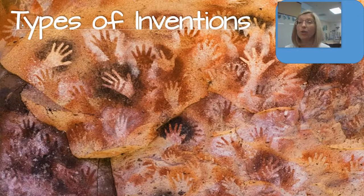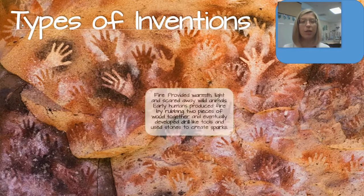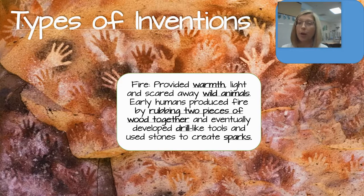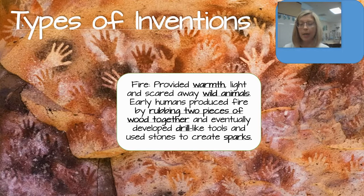Now we're going to talk about the types of inventions during the Paleolithic age. Fire — it provided warmth, light, and scared away wild animals. Early humans produced fire by rubbing two pieces of wood together and eventually developed drill-like tools and used stones called flint to create sparks.